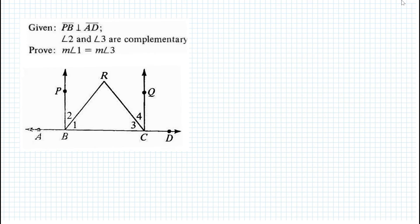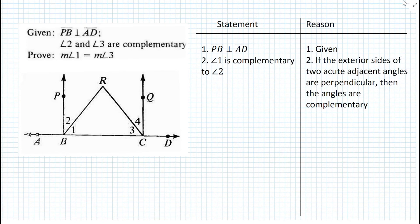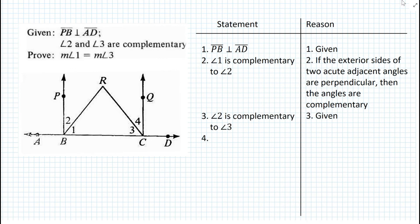Let's look at an example. We're given that segment PB is perpendicular to segment AD, as shown in the figure. We also know that angle 2 and angle 3 are complementary. We need to prove that the measure of angle 1 is equal to the measure of angle 3. In the statement-reason table, first we state that segment PB is perpendicular to segment AD as a given. From that, we can state that angle 1 is complementary to angle 2. The reason is: if the exterior sides of two acute adjacent angles are perpendicular, then the angles are complementary. Then we state the next given: that angle 2 is complementary to angle 3.